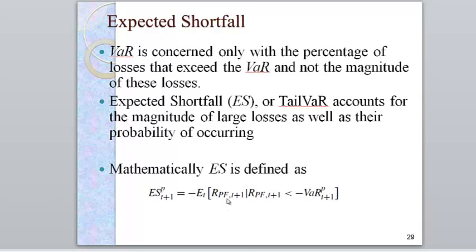Mathematically, how do we write this? The expected shortfall with a certain probability for t plus 1 is equal to minus the expected value at time t of a return of your portfolio, given that that return was lower than minus the value at risk number. It's an average of the losses that exceed that value at risk number with a negative sign.